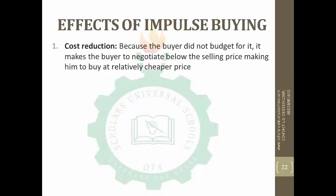What are the effects of impulse buying? Number one: cost reduction. At times you could buy something because you did not budget for it, and it makes the buyer negotiate below the selling price. For instance, you want something and it costs 100 naira, but because you did not plan for it you can only afford 15 naira — so you negotiate. At times if you want to leave, the seller may call you back and agree. You enjoy cost reduction because you did not plan for it and the money you have left is less than the price, so you negotiate a reduced price.